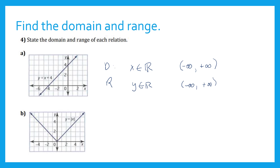For this function, x can extend somewhere to the left and somewhere to the right, so we can have x as an element of real numbers — all real numbers, or negative infinity to positive infinity. For the range, it started at 0, closed at 0, and it can go anywhere up to positive infinity.